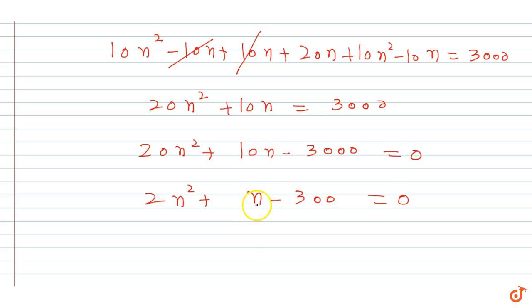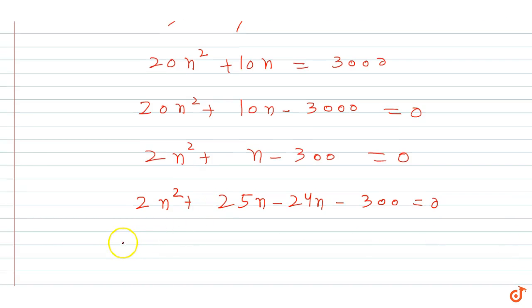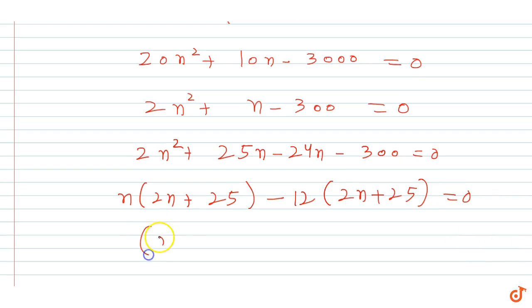Breaking this into two parts: 2n² + 25n - 24n - 300 = 0. Factoring gives 2n(n + 25/2) - 12(2n + 25) = 0, which factors as (2n + 25)(n - 12) = 0.